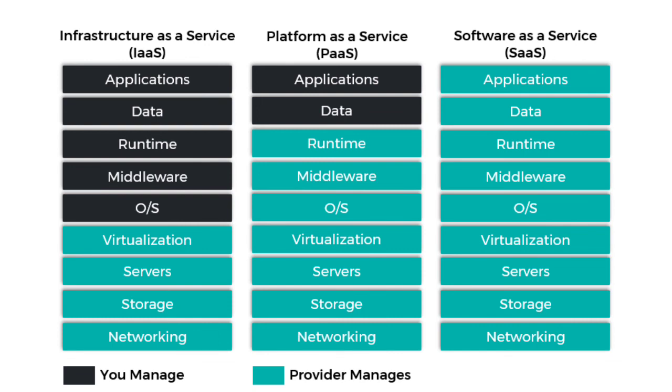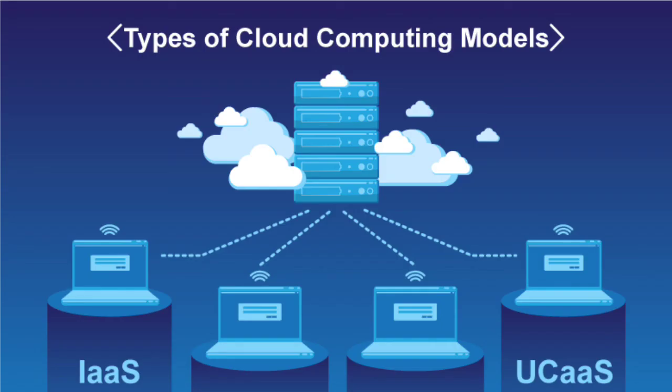The next thing is software as a service. In software as a service, we can do everything accessible through the internet. Examples include Google Drive, Gmail, and Microsoft Office — these are all software as a service. This covers the three types of service models, and we can explore more in the upcoming videos.